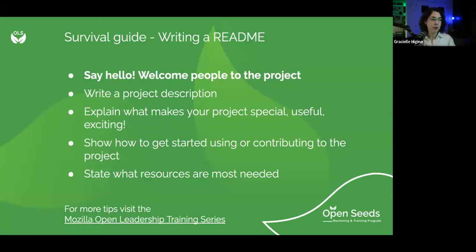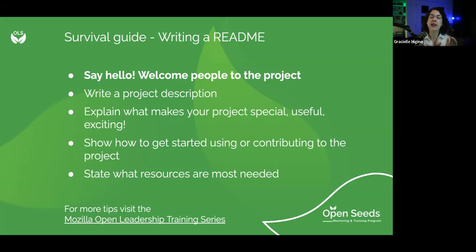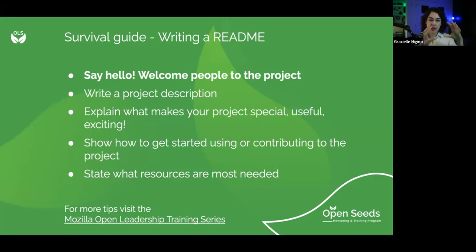A small recipe for README: first you say hello and welcome people to the project, then you write a small project description that is clear and succinct. You explain what makes your project special, useful, and exciting — this is related to your value proposition and your vision statement. Then you show how to get started using or contributing to the project, so you link or direct people to exactly how they can start using your project or what you need help with. Then you state what resources are most needed, which connects to the canvas as well — the bottom part where we have resources needed — and that's also summarized in the README.